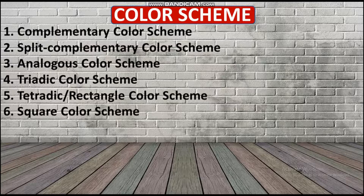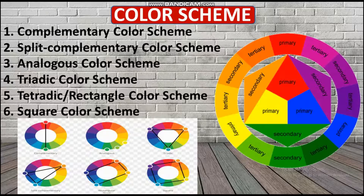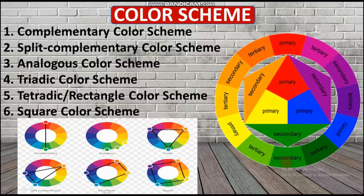Here we will see the color wheel and I will explain the color schemes. The first one is the complementary color scheme. You select any color on the color wheel and the second color is the one directly opposite. For example, if you select red, the opposite is green. If you select blue, the opposite is orange. This color wheel was made with proper research and study.